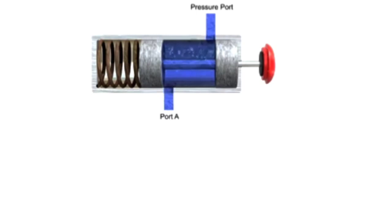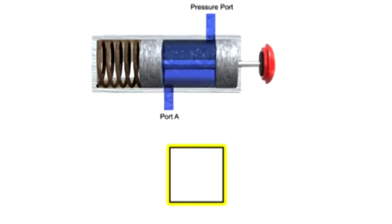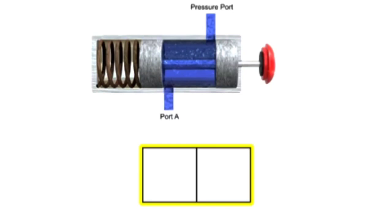To simplify fluid system drawings and schematics, all valves can be represented graphically. Boxes, sometimes called envelopes, are used to indicate the number of valve positions. Since this is a two-position valve, its graphic representation has two adjacent boxes.